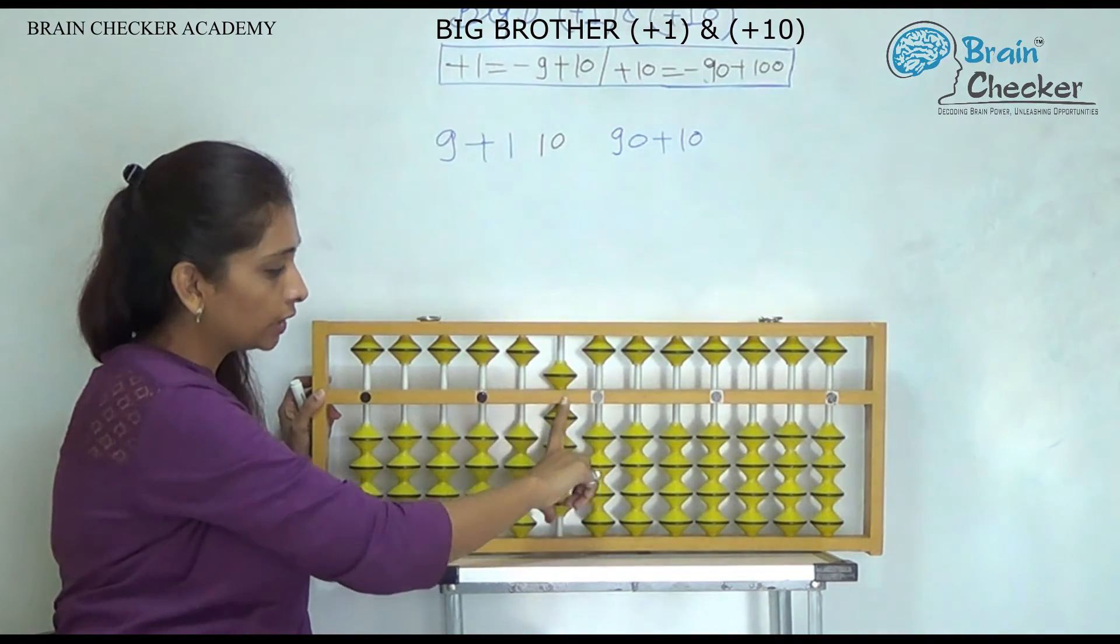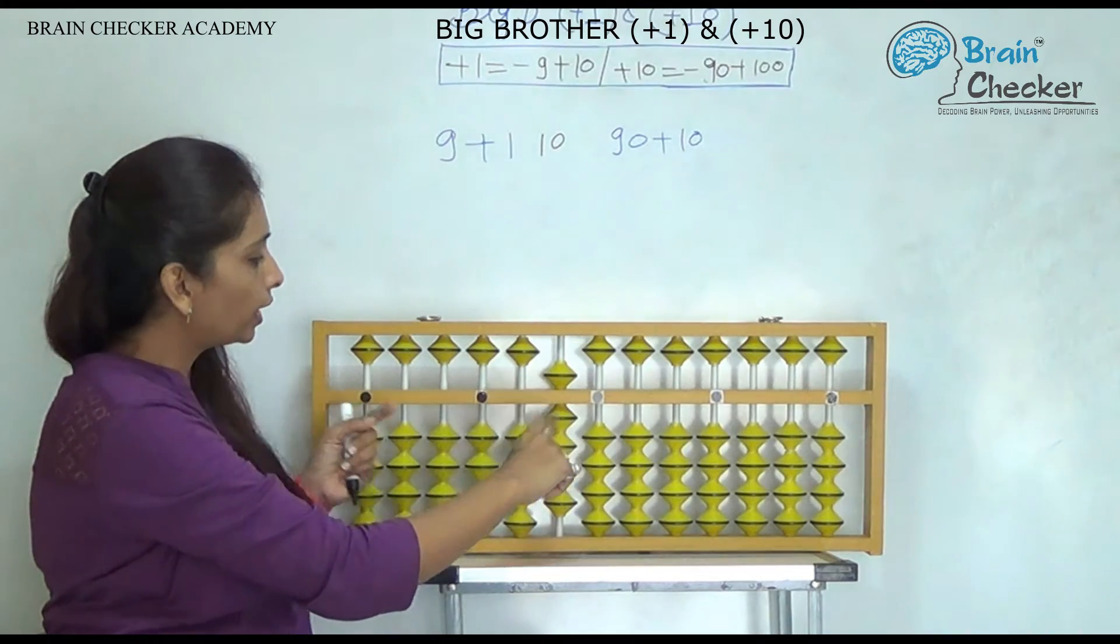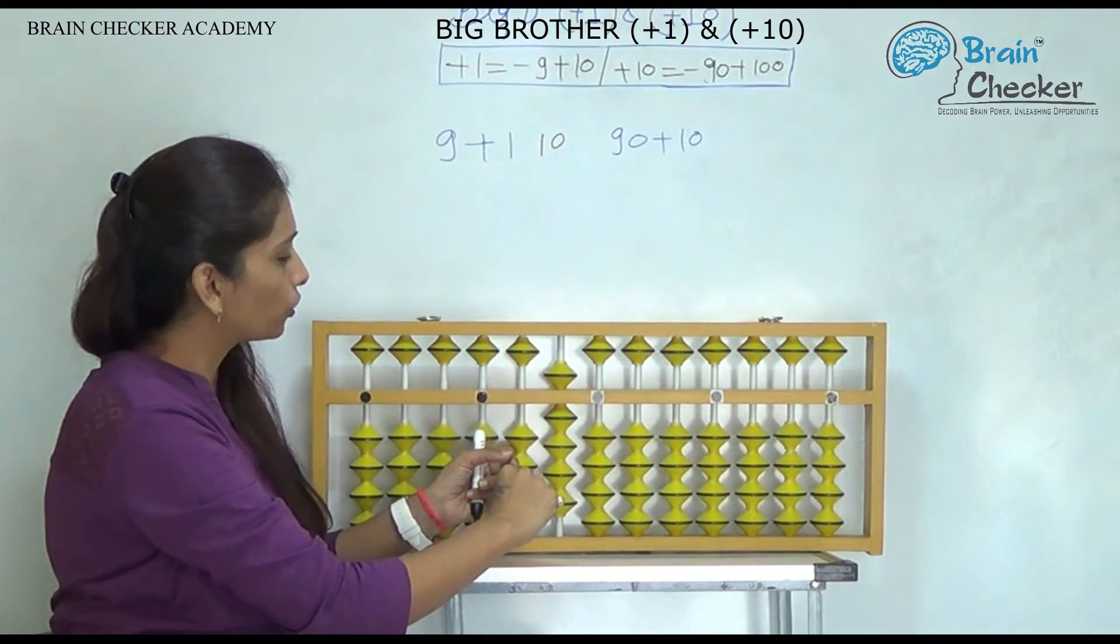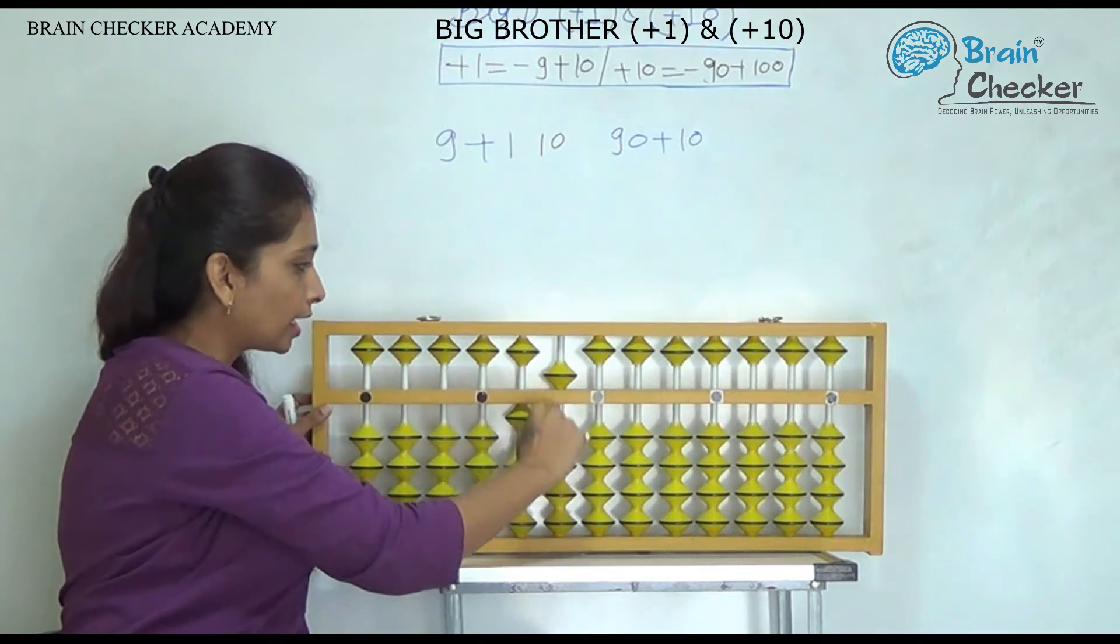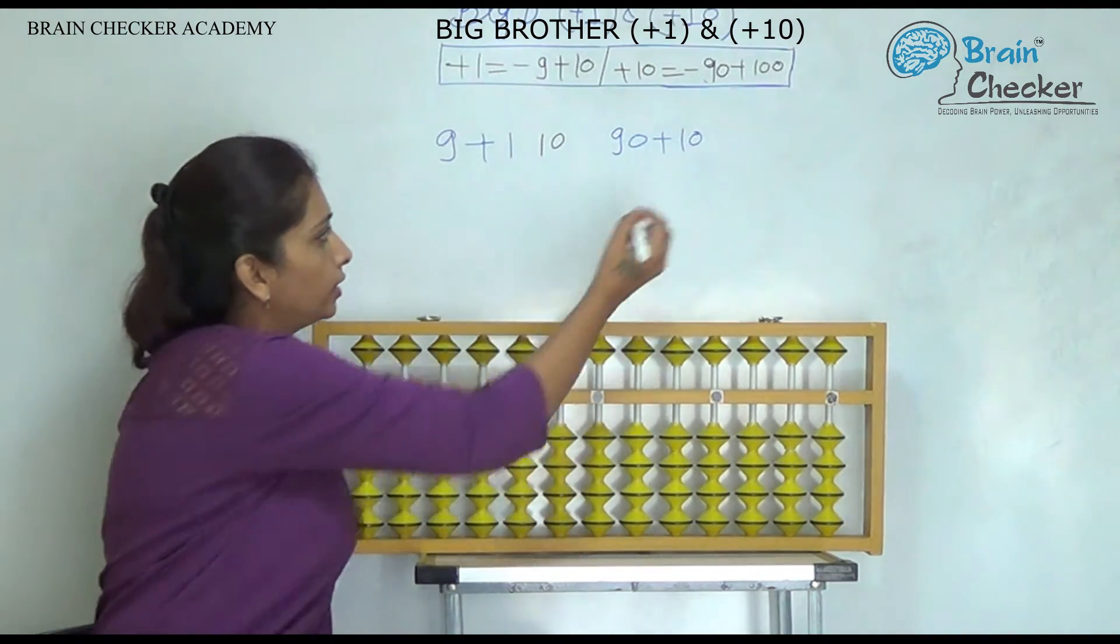So I have taken the 90 on the 10th rod, and to add 10, what I will do? I will use the formula add 100 less 90. So the answer is 100.